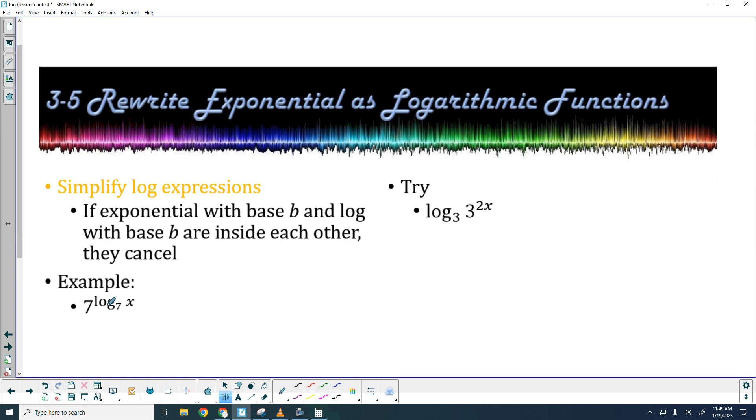On this one, they're just trying to get you to realize that if you've got a base and a log with the same base, they cancel each other out. And that's going to become important when we start solving them. So that answer is x. Here, I have a log base 3 and an exponent with a base of 3. They're going to cancel each other out because they're really inverses of each other. And that is going to be 2x.